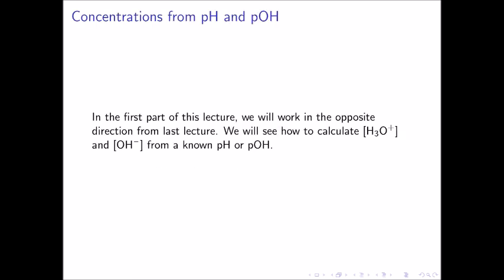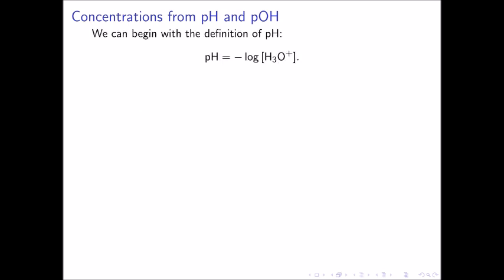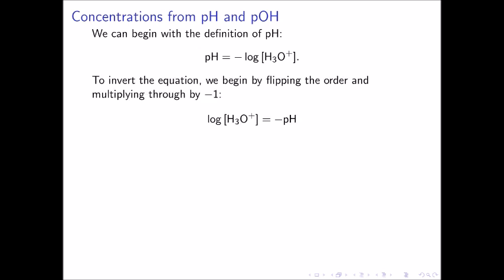The first part of this lecture will very much feel like the opposite of the last lecture. We will work in the opposite direction to see how to calculate hydronium ion and hydroxide ion concentrations from a known pH or pOH. We will begin with the definition of pH. Recall that the pH is equal to the negative logarithm of the hydronium ion concentration. To invert the equation, we begin by flipping the order and multiplying through by negative 1. This gives the logarithm of the hydronium ion concentration on the left-hand side equal to the negative pH on the right-hand side.